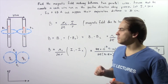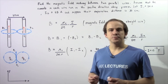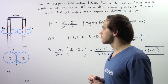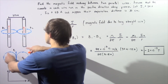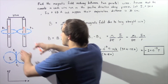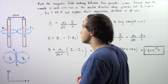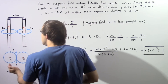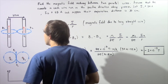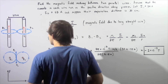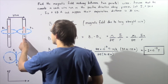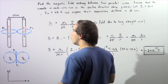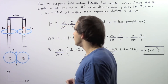Let's examine an example that deals with magnetic fields produced as a result of electric currents flowing through straight conducting wires. We have two straight conducting wires placed parallel to one another. Wire number 1 has an electric current I1 running in the positive y-axis direction, and likewise, wire number 2 has a current I2 also running in the positive y-axis direction, as shown by the arrows.